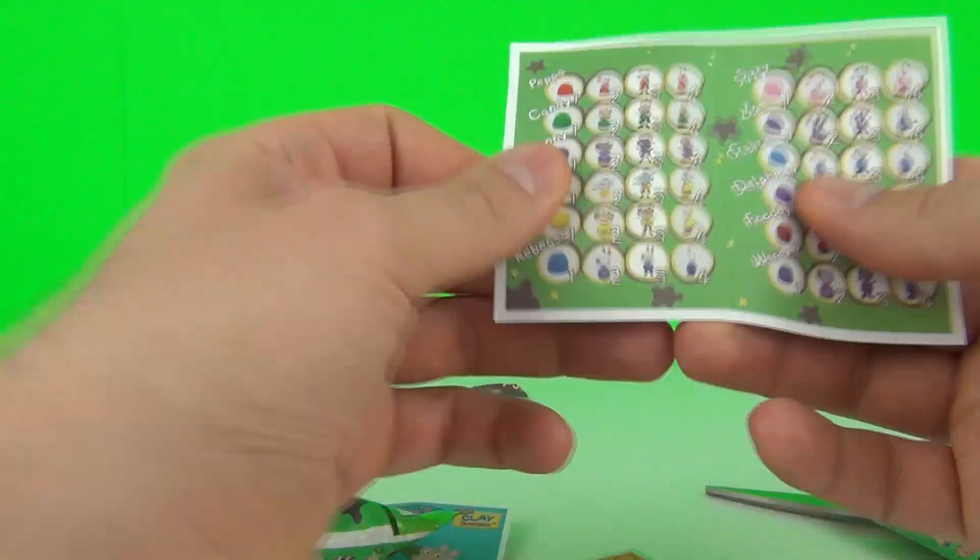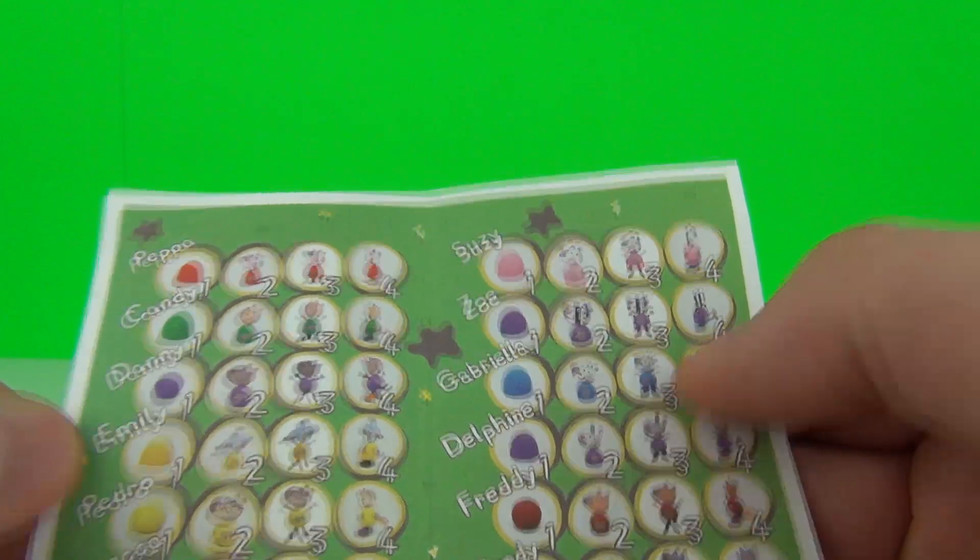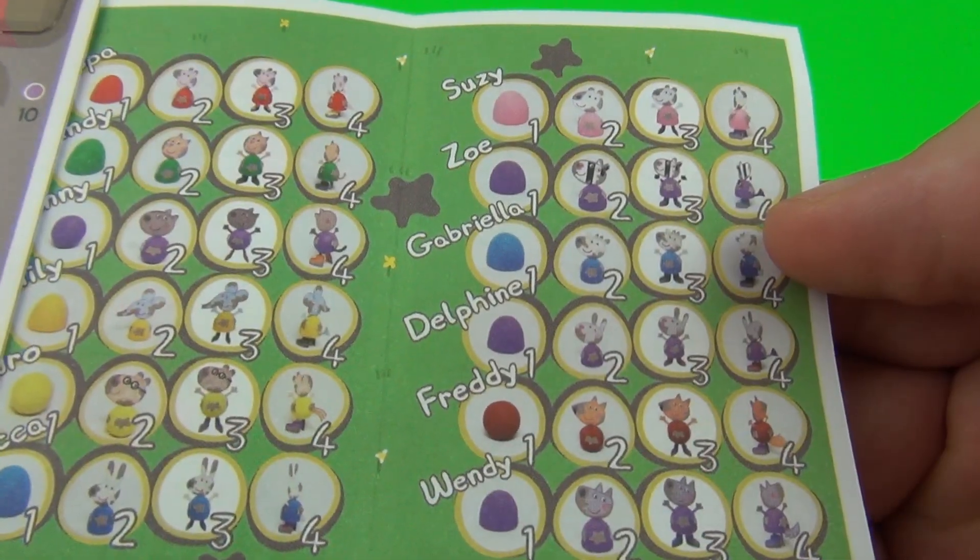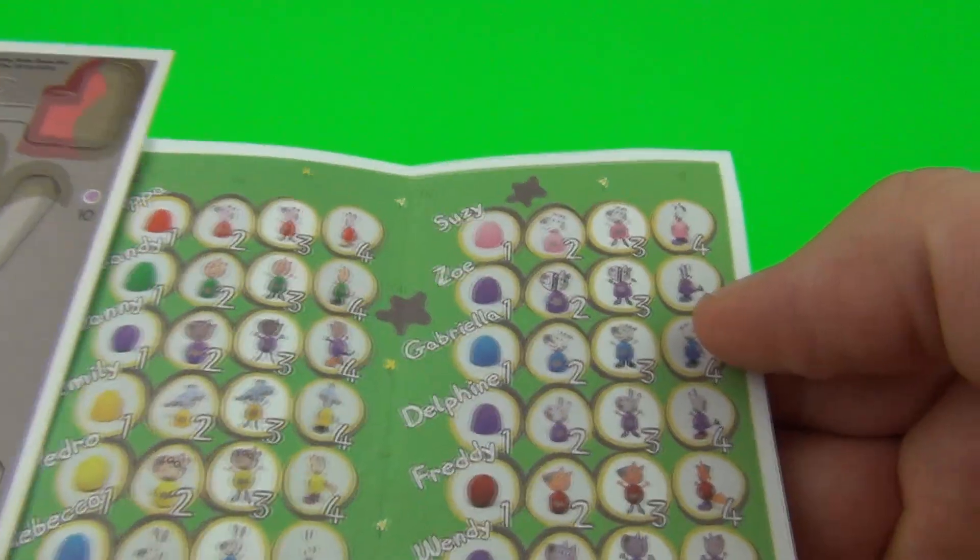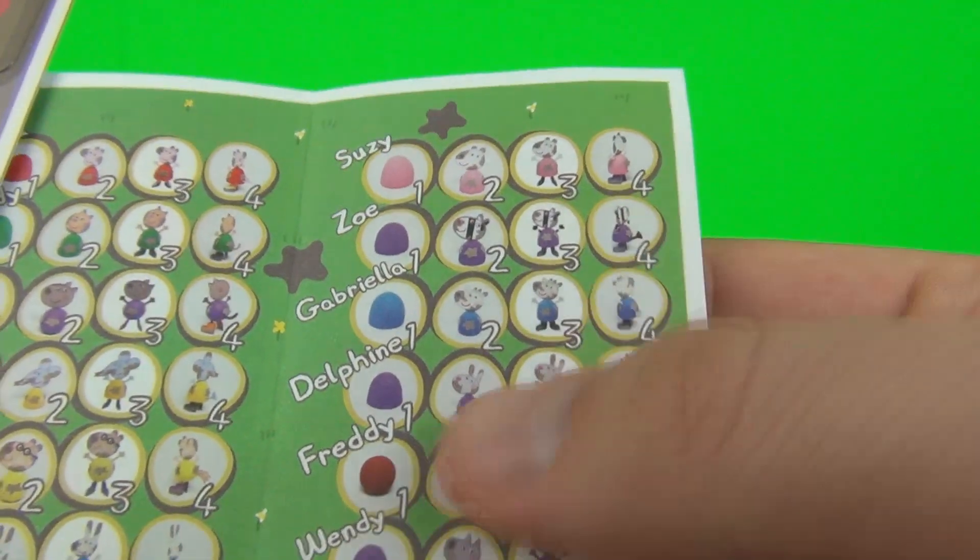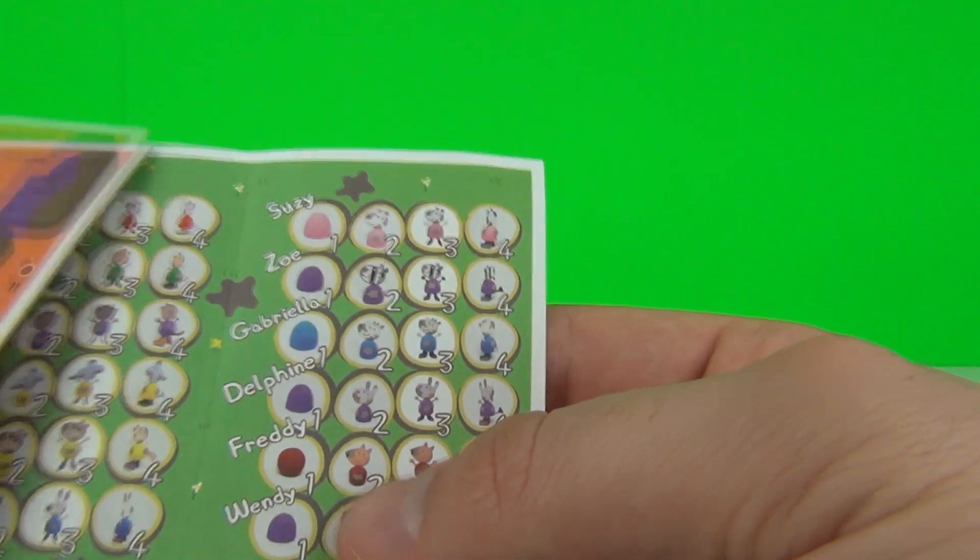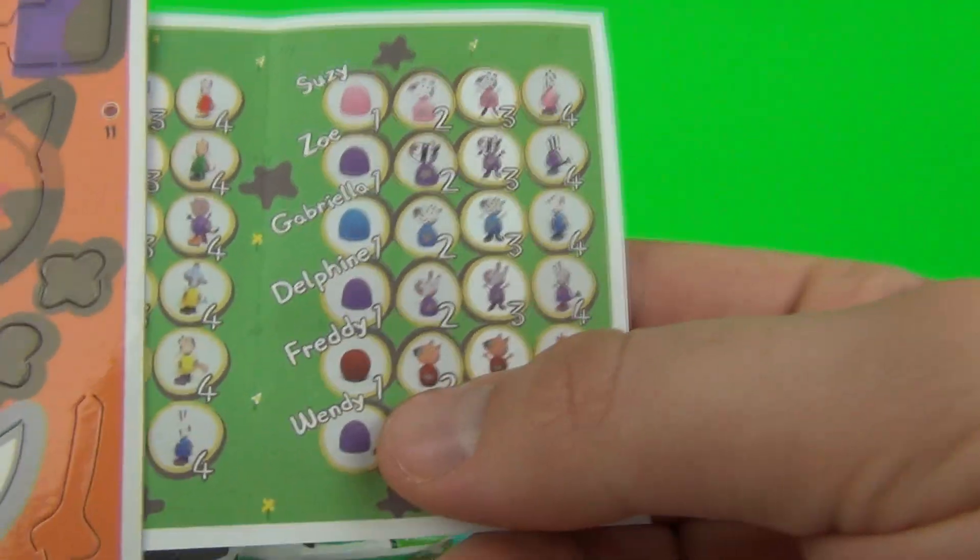Let's have a look at the checklist and see if we can figure out who we have. It looks like we have Delphine and that is that one there. So there is Delphine we should put that back. And we also have Freddy as well.